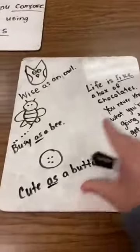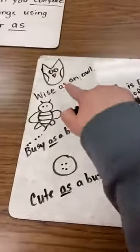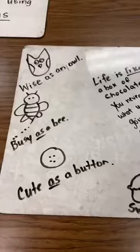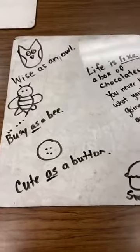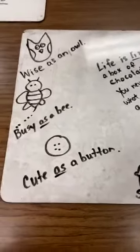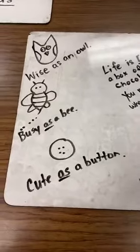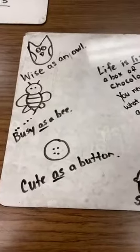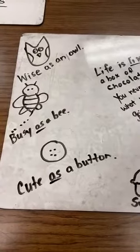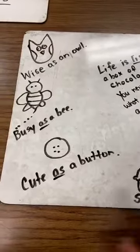I have some examples here for you today. The first one that I have is: wise as an owl. Owls are usually wise, so that's why it's comparing the person to an owl — because they're wise like an owl.